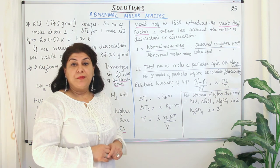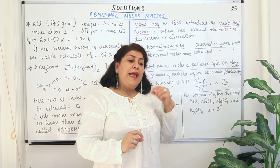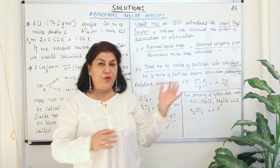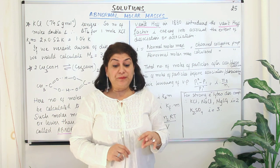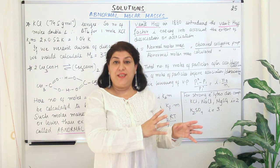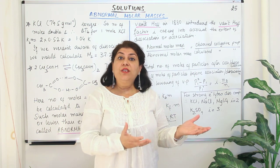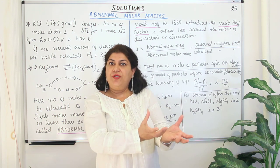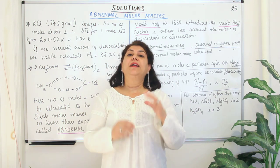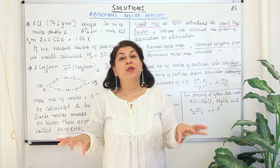Now there is a problem. Since colligative properties only depend on the molality — anything that may affect the molality or concentration of the solute, for any reason, will affect the colligative property. Because colligative property does not depend on the nature of the solute; it only depends on the number of particles. So let us assume you have an ionic compound. You know that ionic compounds dissociate into ions when you dissolve them in water.